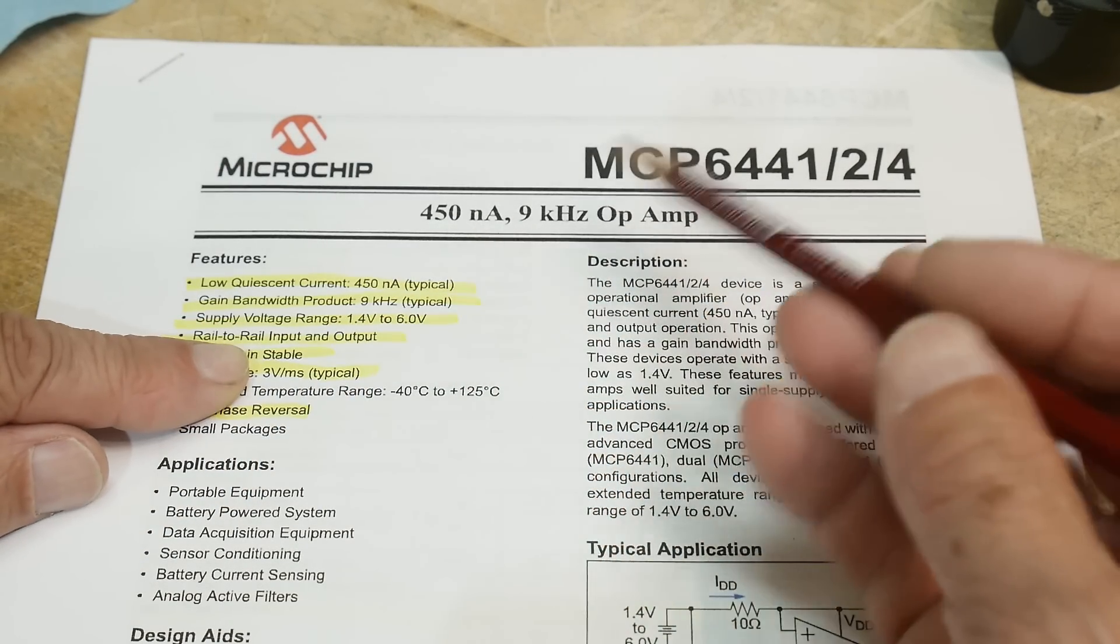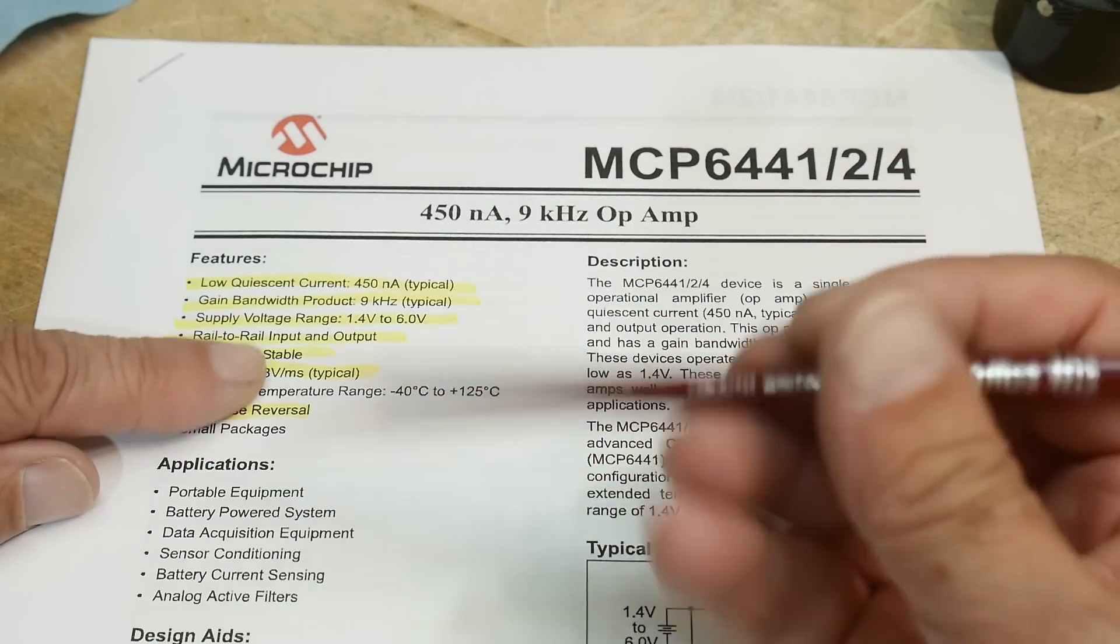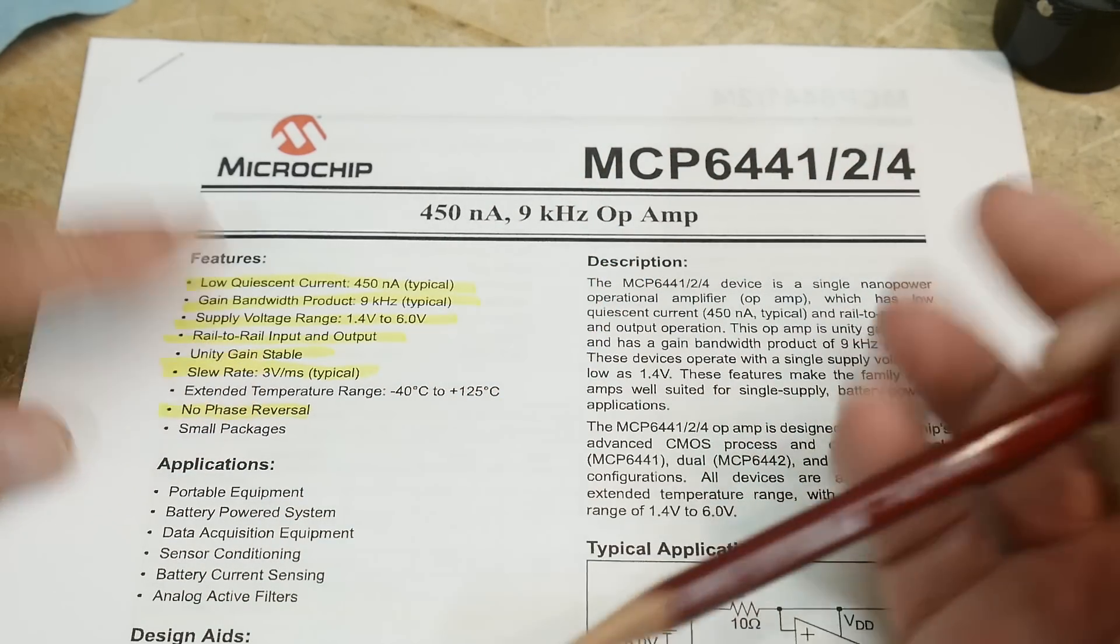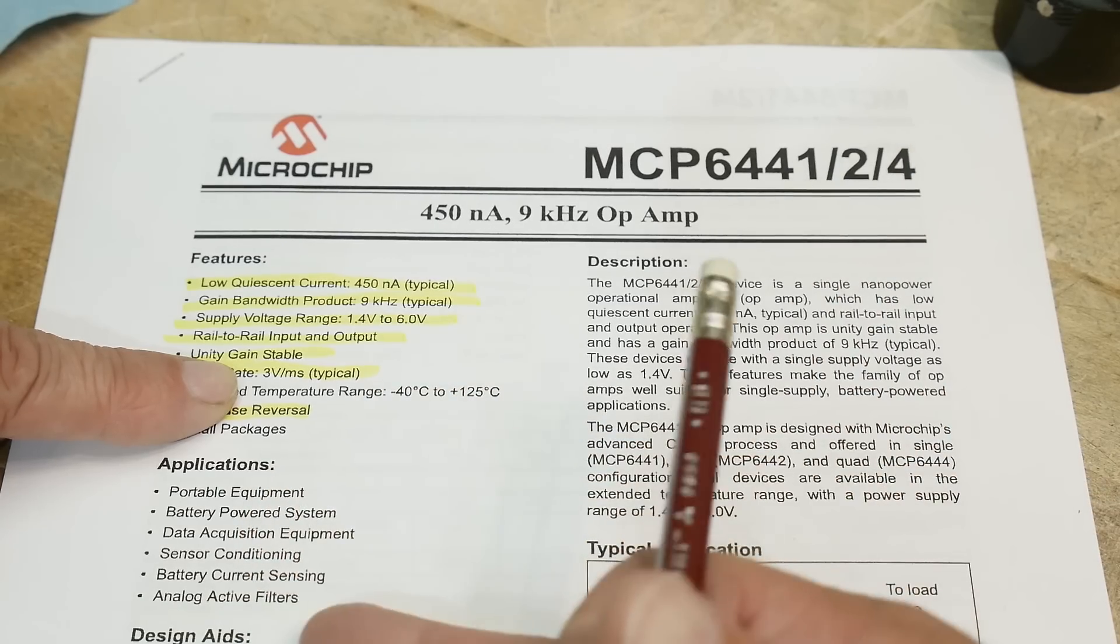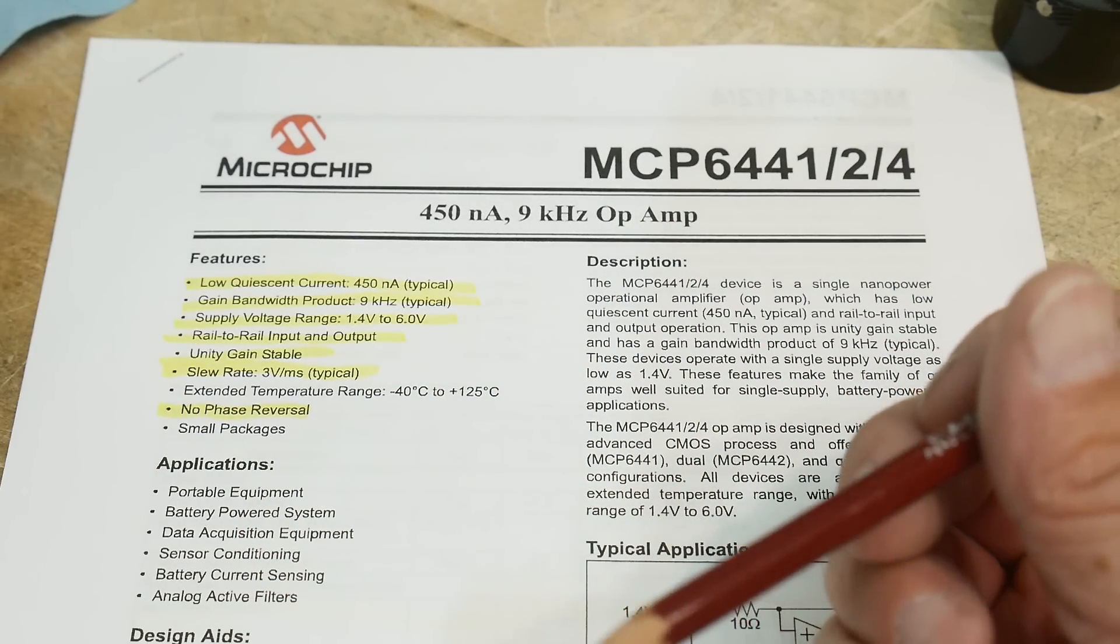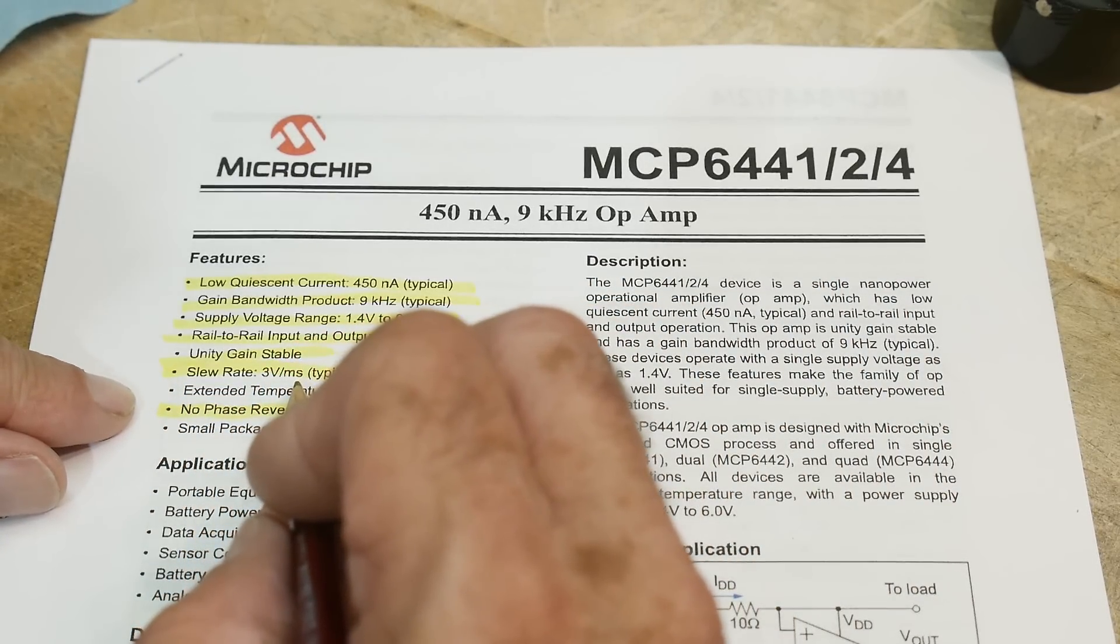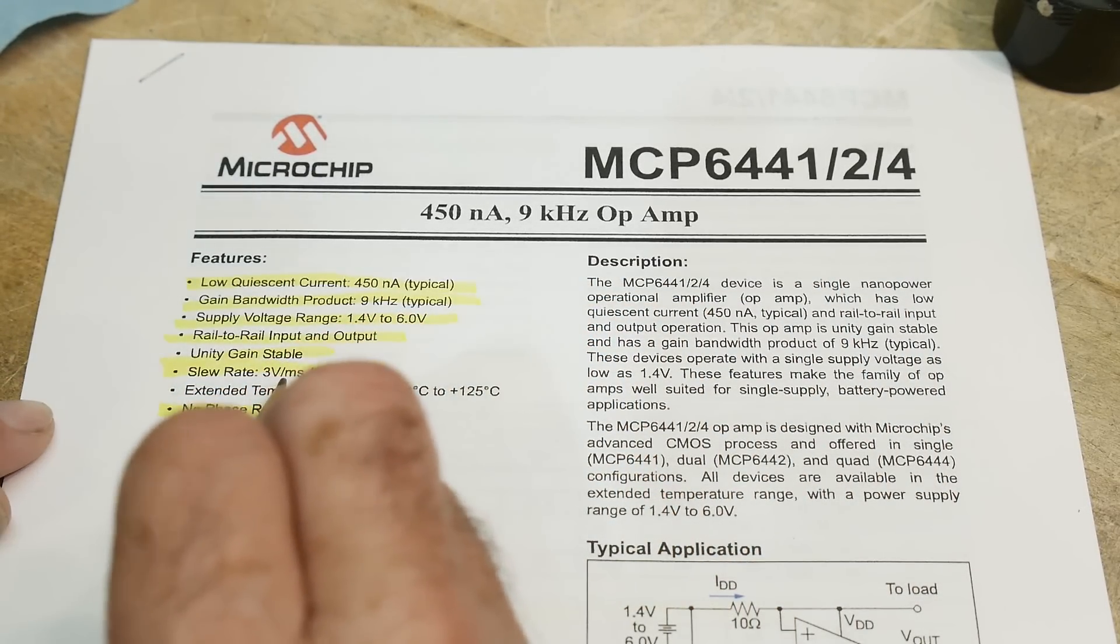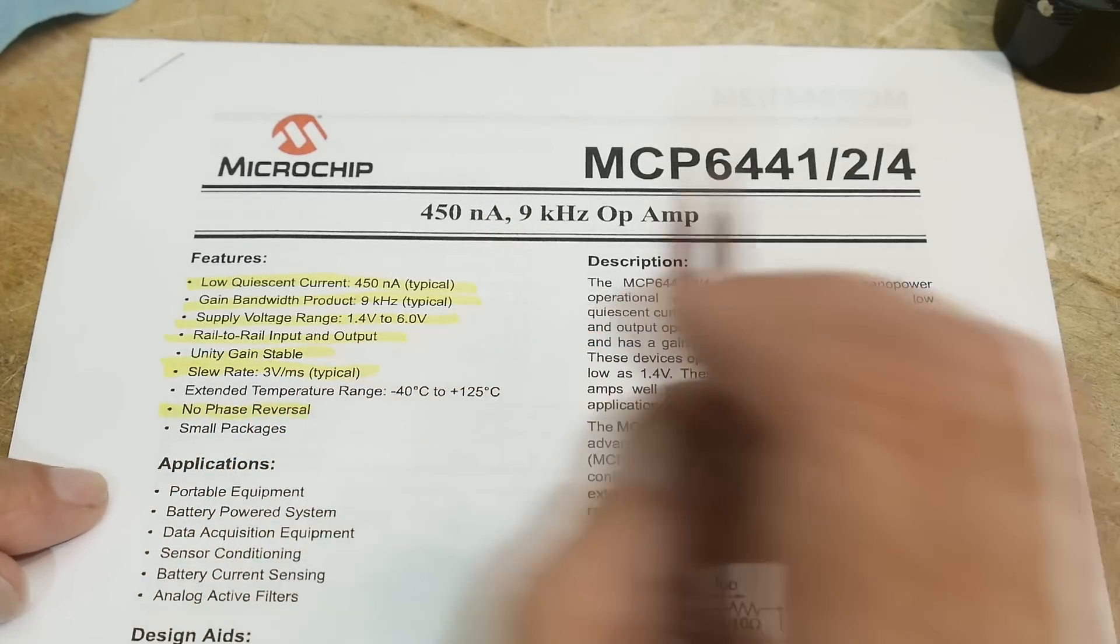And it is true rail to rail with no phase inversion. I need to do a video on phase inversion, but rail to rail works perfectly fine from, let's say you have it at zero to five volts, it'll work all the way to zero and all the way to five. The slew rate is really awful, three volts per millisecond. Wow, I've never seen such a terrible spec. Goes along with the 9 kilohertz.